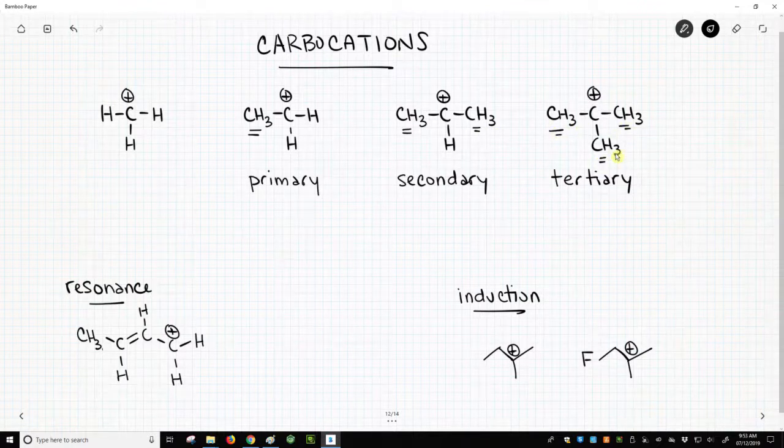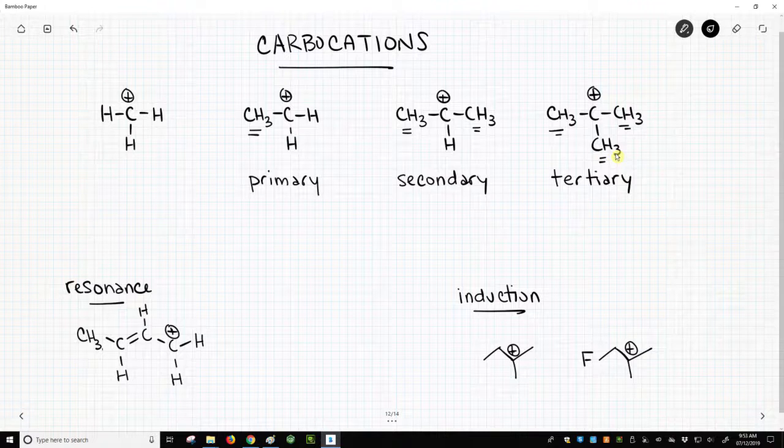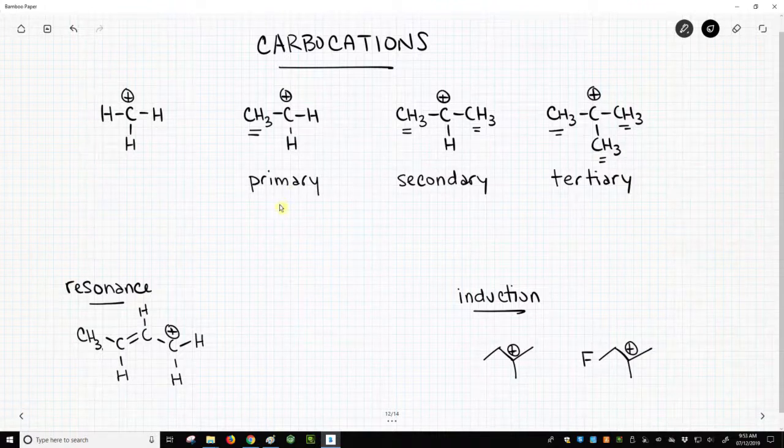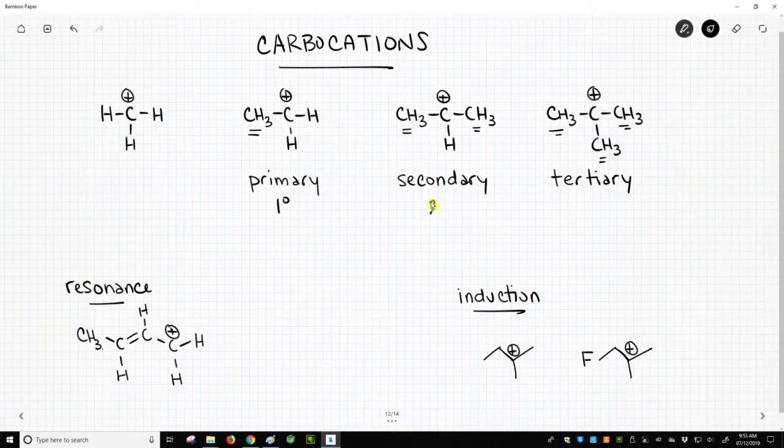Now these types of carbocations have special names, and it creatively goes back to how many carbons are on the carbocation center. So the second one, we call it a primary center. Sometimes we write that one with a degree sign. When we have two carbons on it, we call it secondary.